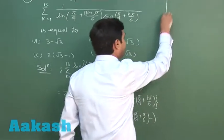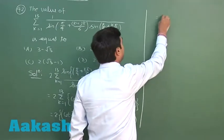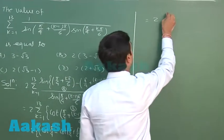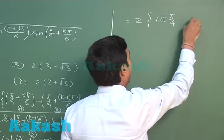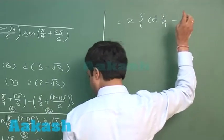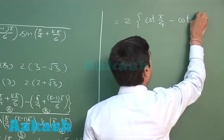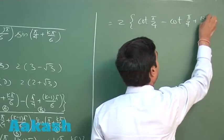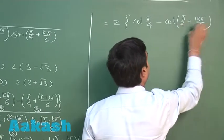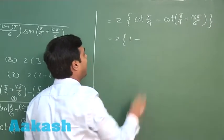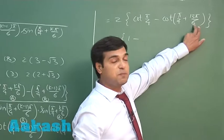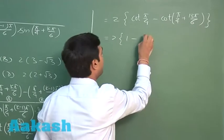So this is equal to twice of cot(π/4) minus cot(π/4 + 13π/6). Or simply twice of 1 minus this is 2π plus π/6, so this is cot(π/6 + 2π), that is cot(13π/6).